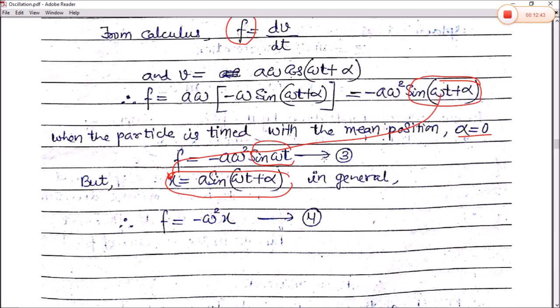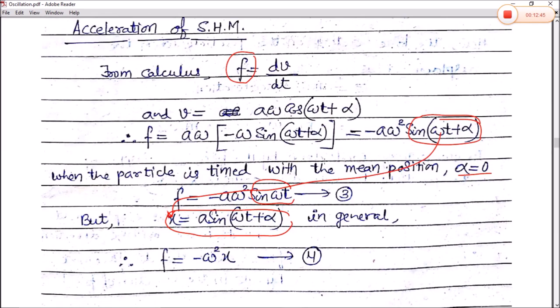These are the elementary expressions for displacement x, velocity, and acceleration in simple harmonic motion. In the next class, we will discuss energy terms — kinetic energy, potential energy, and total energy — and how the values of these three energies can be calculated with the help of calculus.